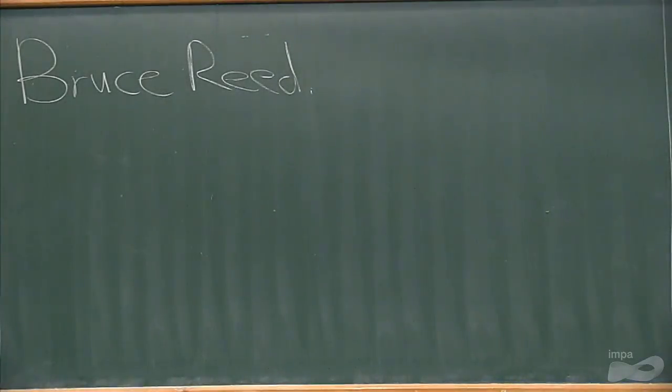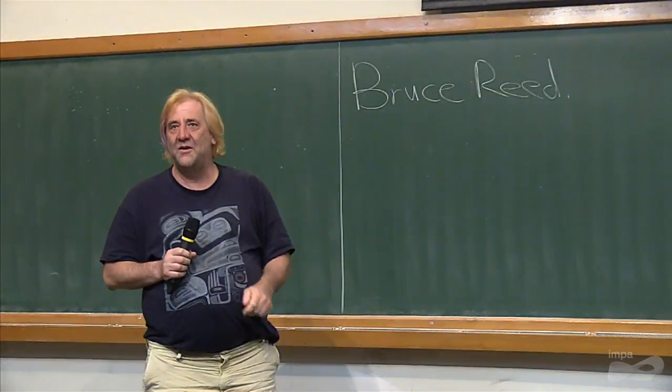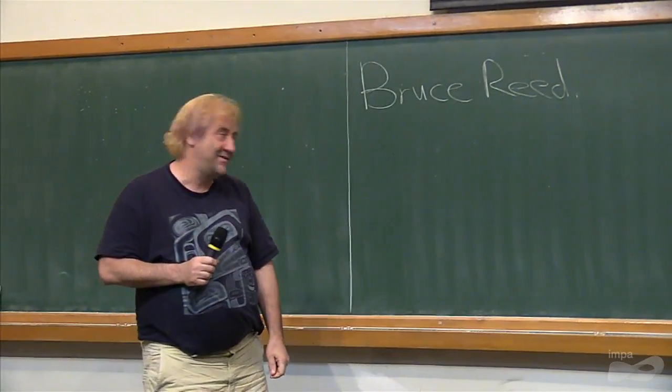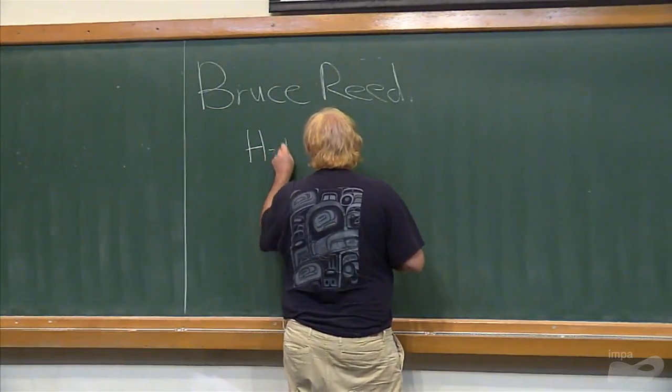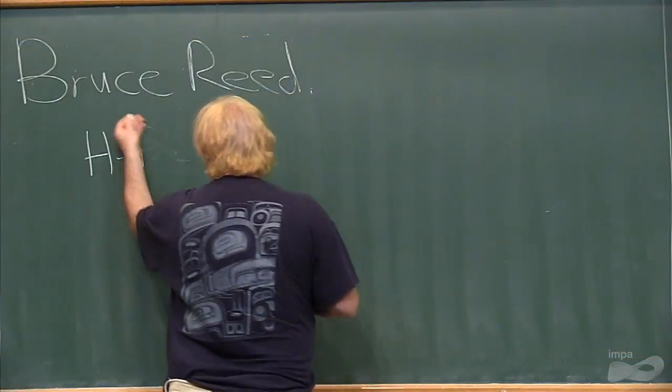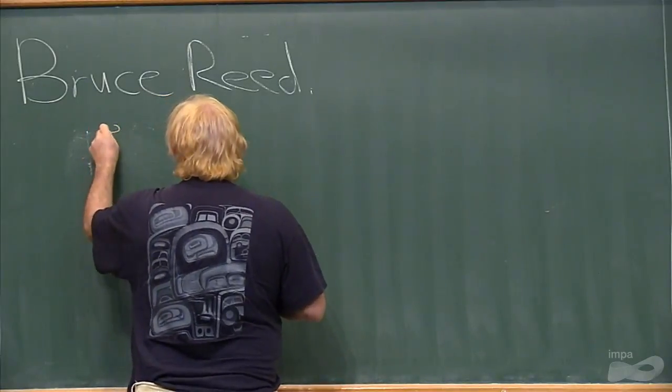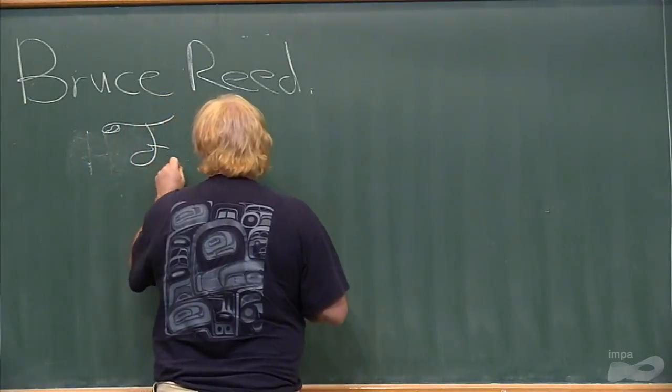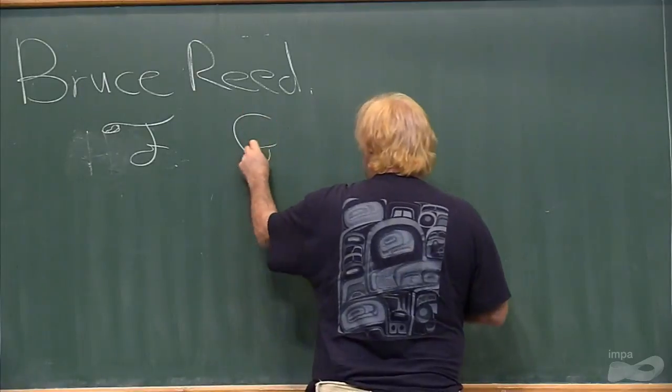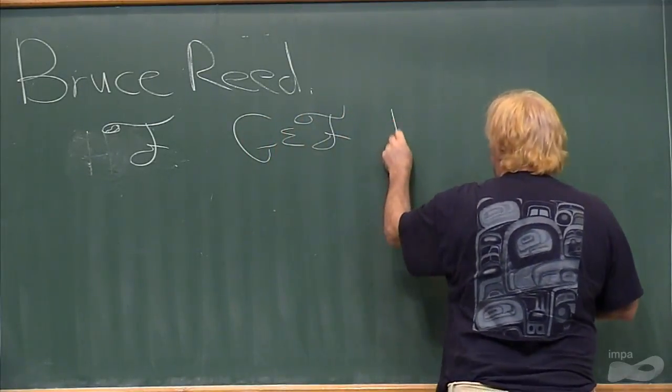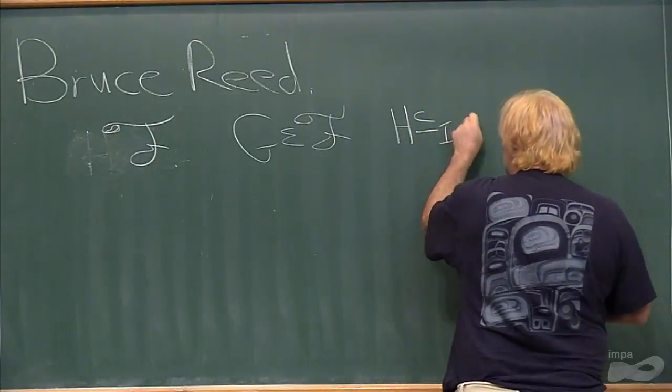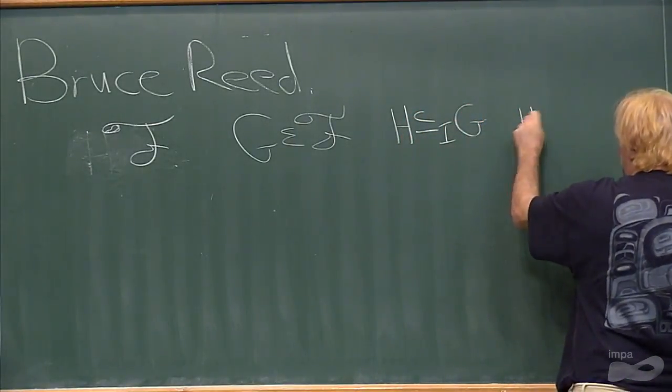I want to talk to you about, tell you a problem about the structure of almost all graphs in a hereditary family. So I've got F is a hereditary family, that means that if G is an element of F and H is an induced subgraph of G, then H is an element of F.